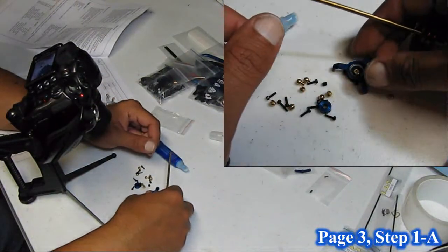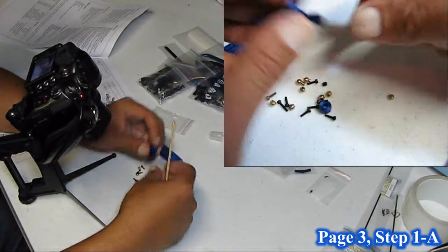Start with the balls around the outside of the swash, since they all use the same screw and are all the same matching ball.